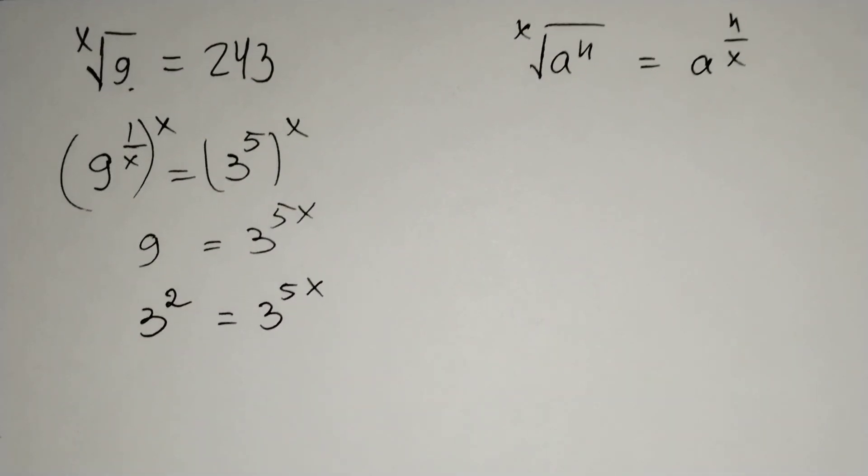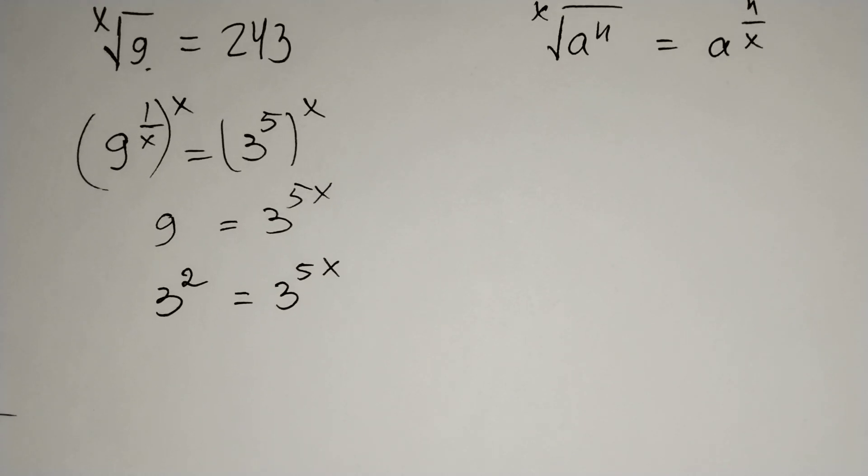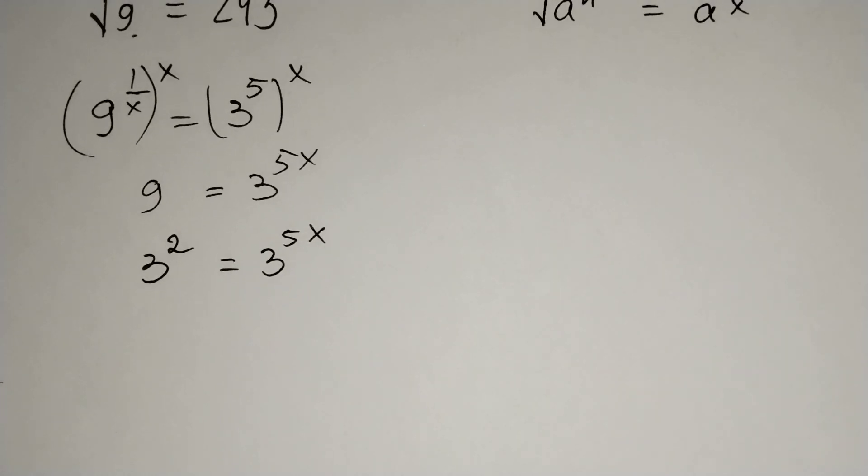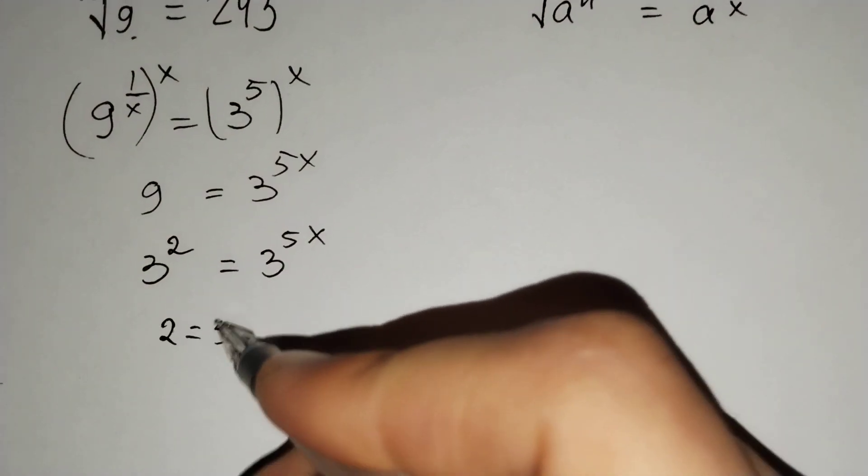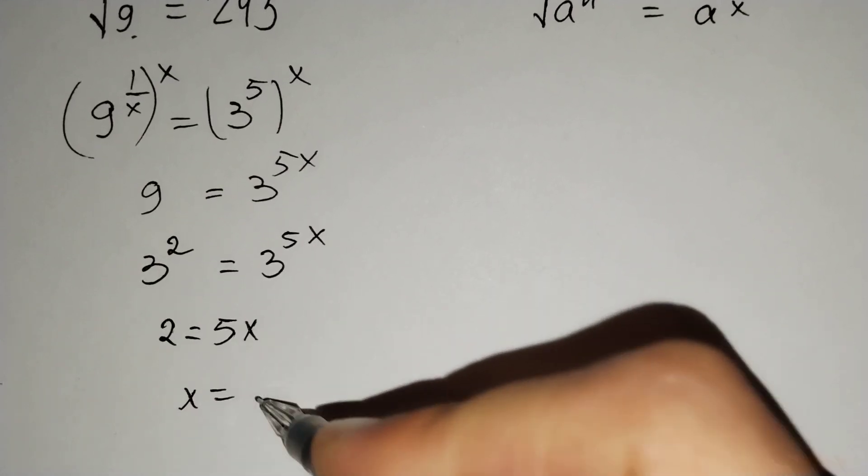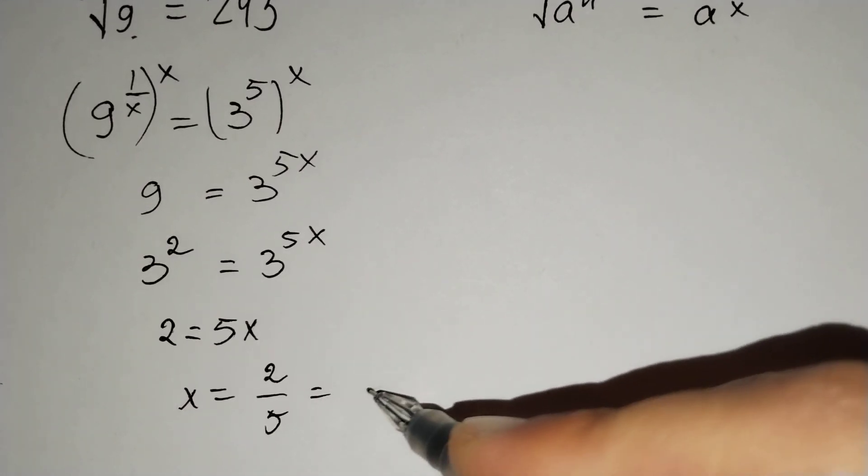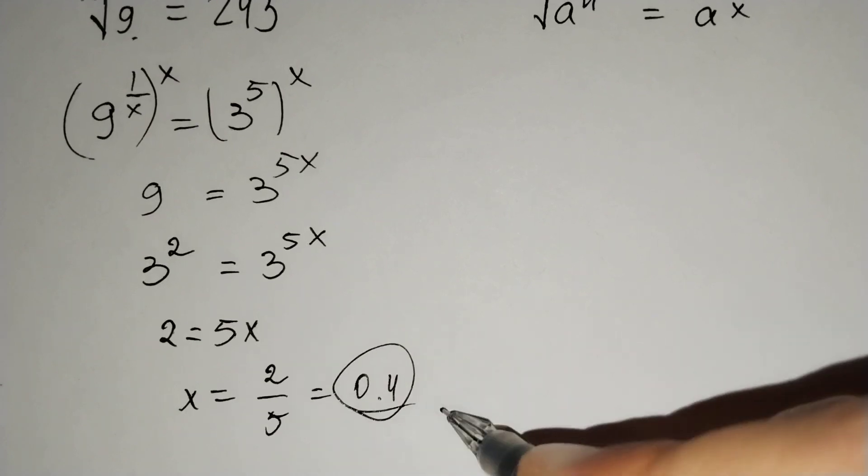And the bases are same, that's why the exponents should be equal. 2 equals to 5x. And x equals to 2 over 5, which is 0.4.